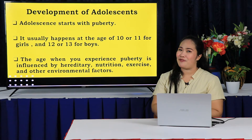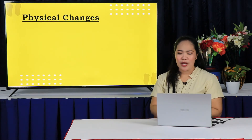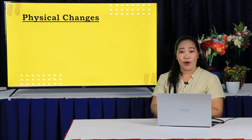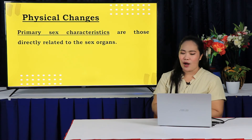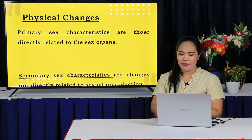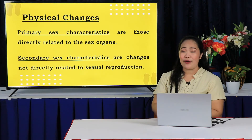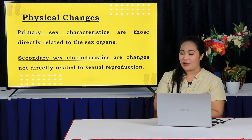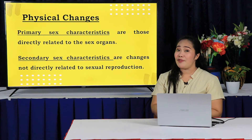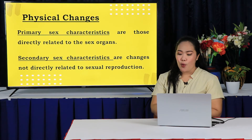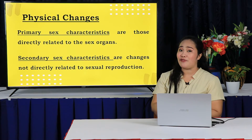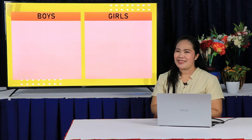The age when you experience puberty is influenced by heredity, nutrition, exercise, and other environmental factors. For the physical changes, the reproductive organs of both boys and girls grow and develop. The primary sex characteristics are those directly related to sex organs. The secondary sex characteristics are changes not directly related to sexual reproduction. Some of the most significant parts of pubertal development involve distinctive physiological changes in height, weight, body composition, and circulatory and respiratory systems, largely influenced by hormonal activity.